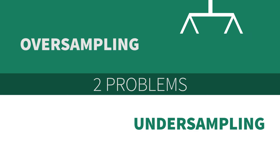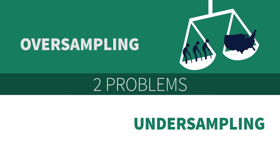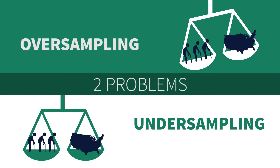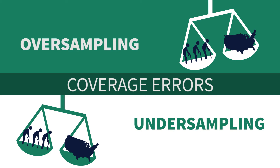Oversampling means the proportion of that group within the sample is larger than the proportion within the actual population. Undersampling is the inverse, meaning we have too few cases of a certain variety. These are problems known as coverage errors, and coverage errors are my enemy.